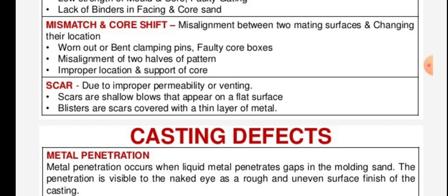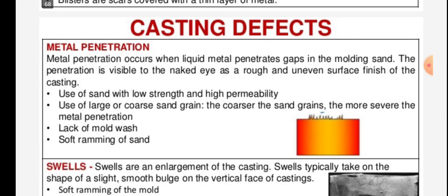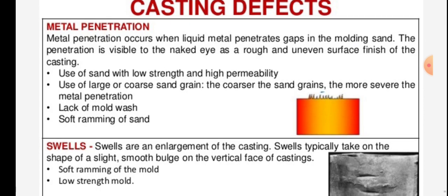Scar defects are due to improper permeability or venting; scars are shallow blows that appear on flat surfaces. Blisters are scars covered with a thin layer of metal.